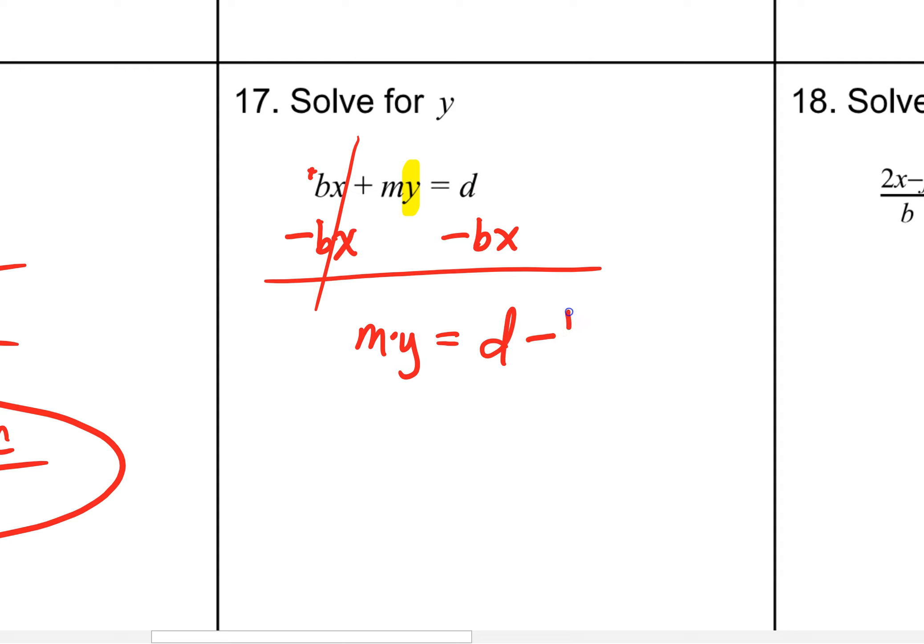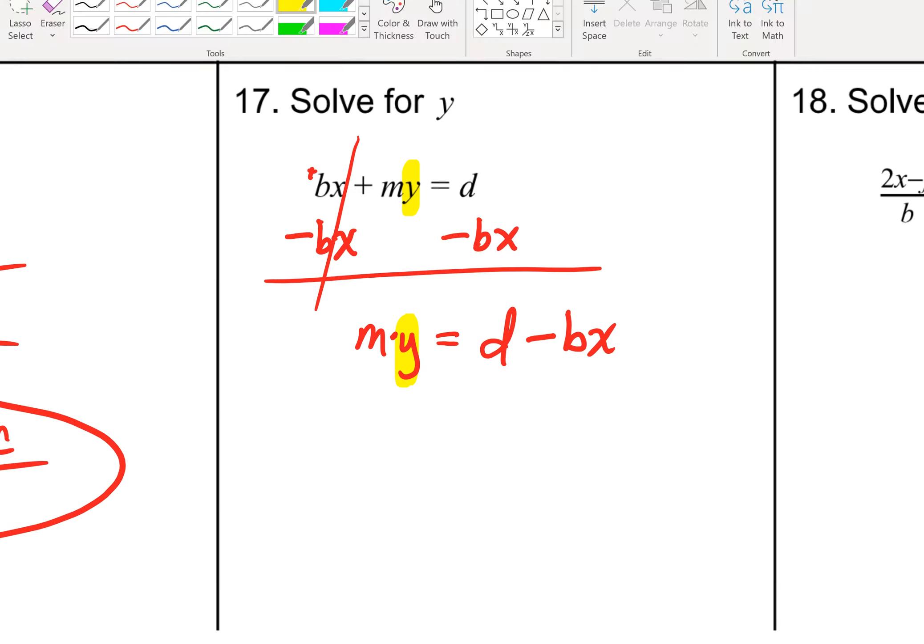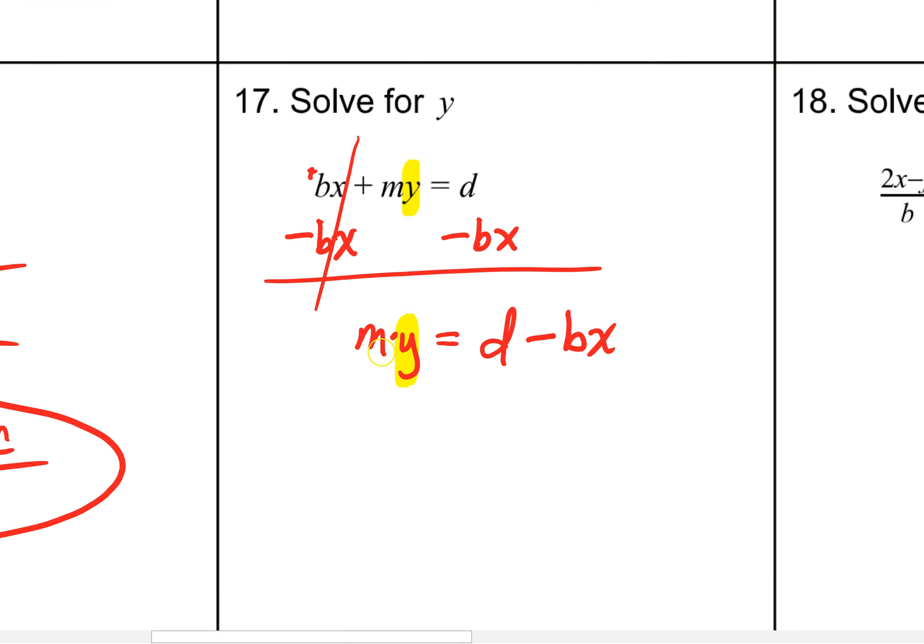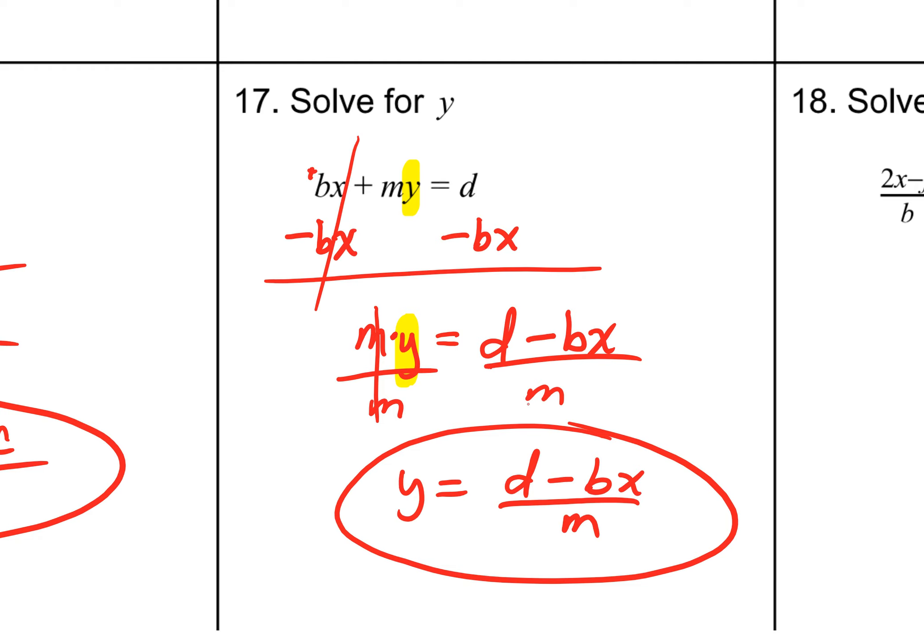So, I'm going to have m times y left on this left-hand side. Here, I'll have d subtract bx. And it's better. The left-hand side is closer to having y alone. We have m multiplied to y. And I want to get rid of that m. So, the inverse operation of m multiplied to something would be to divide both sides by m. And your final answer can look rather complicated, but it's just d minus bx all over m.